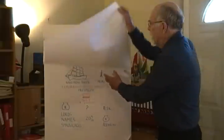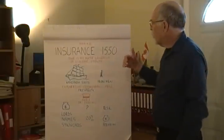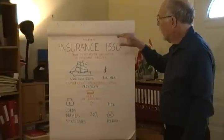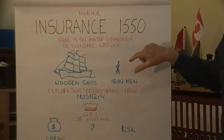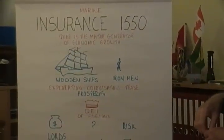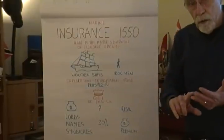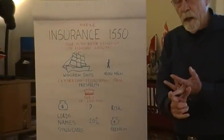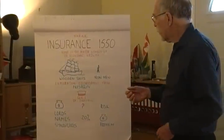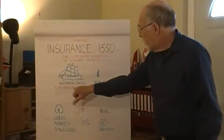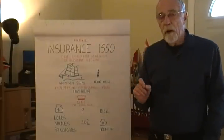Now where did all this start? This is where it really gets interesting. Insurance has been going on for many, many years, but we're going to cut short a little bit and go to 1550. In 1550 in Britain, they already realized that trade is the major generator of economic growth — the more you can buy and sell, the more your country will prosper. But in those days it wasn't iron ships; it was wooden ships and iron men. They had no charts, they didn't know much about the rest of the world, they were going to unknown places and trading with unknown people. There were all sorts of risks involved, including the weather. But to prosper they had to continue with exploration, colonization, and trade.